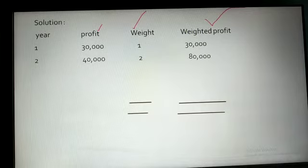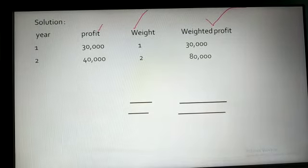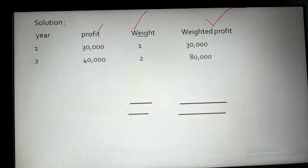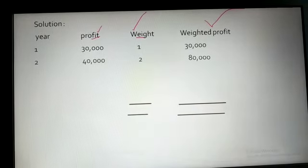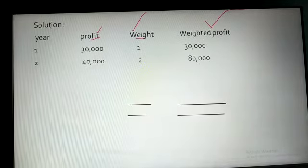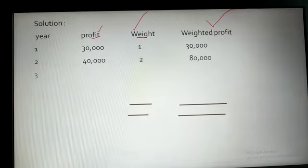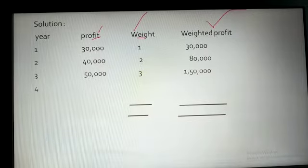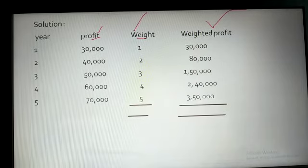You will not give the product of profit and year because you have to find weighted profit. In some cases, the weights of the year are separately given, so the product will only be of profit and weight. For the third year, profit is 50,000, weight is 3, and weighted profit is 1,50,000. Similarly, we fill in the fourth year and the fifth year.